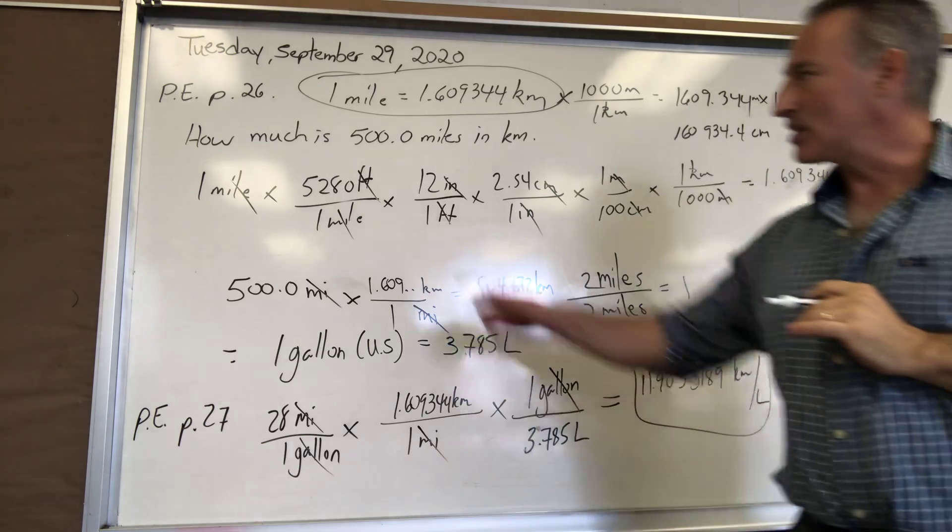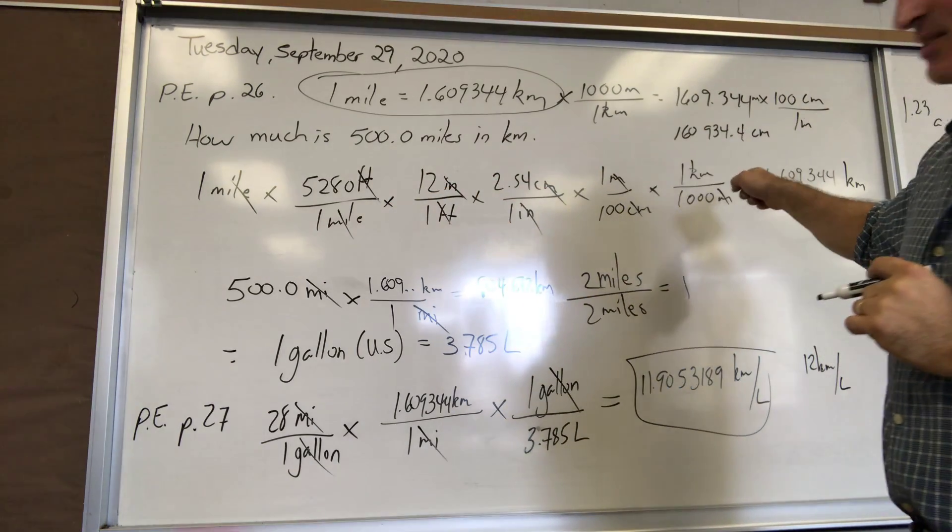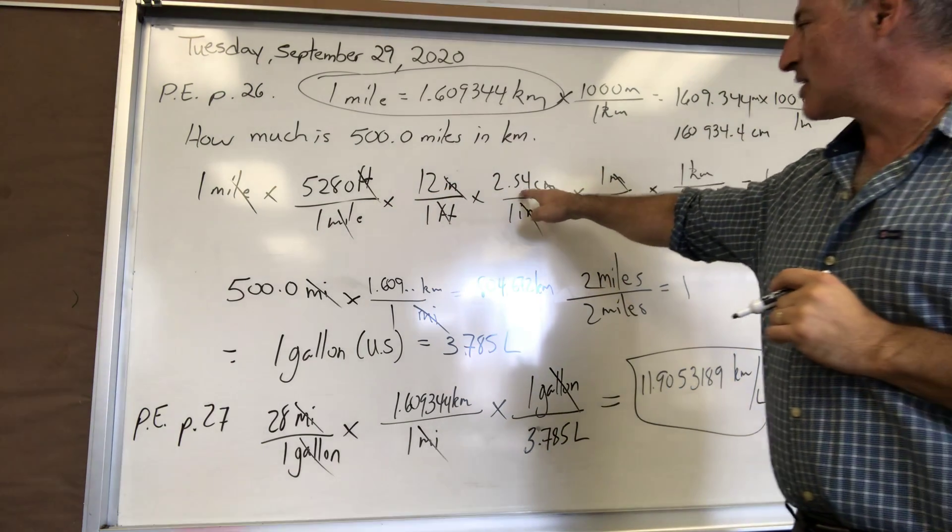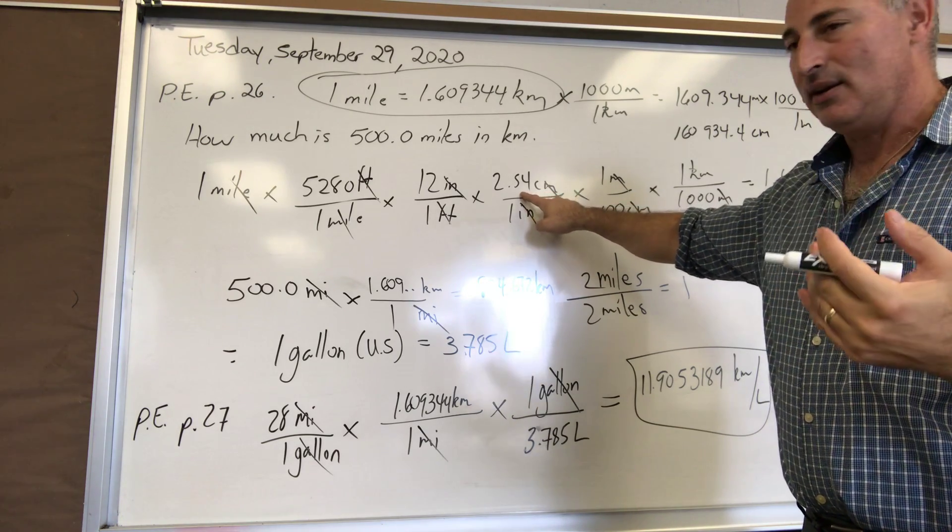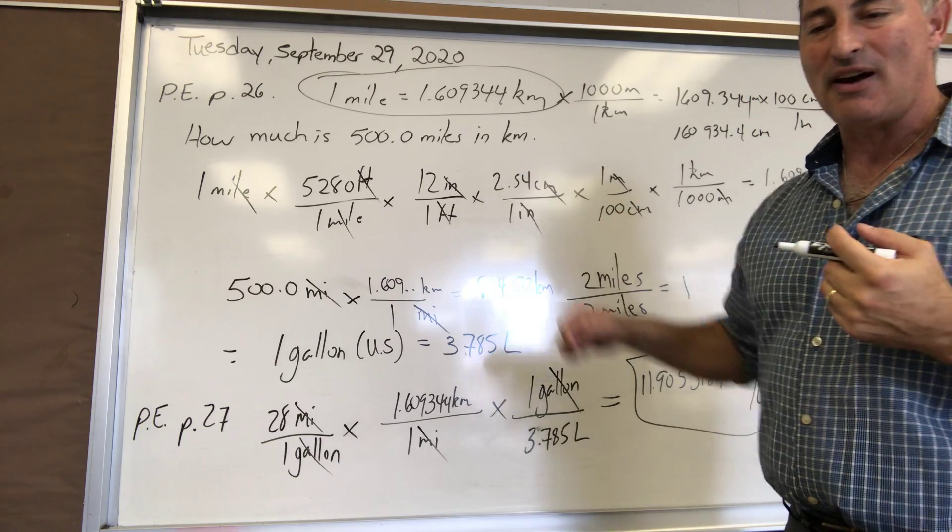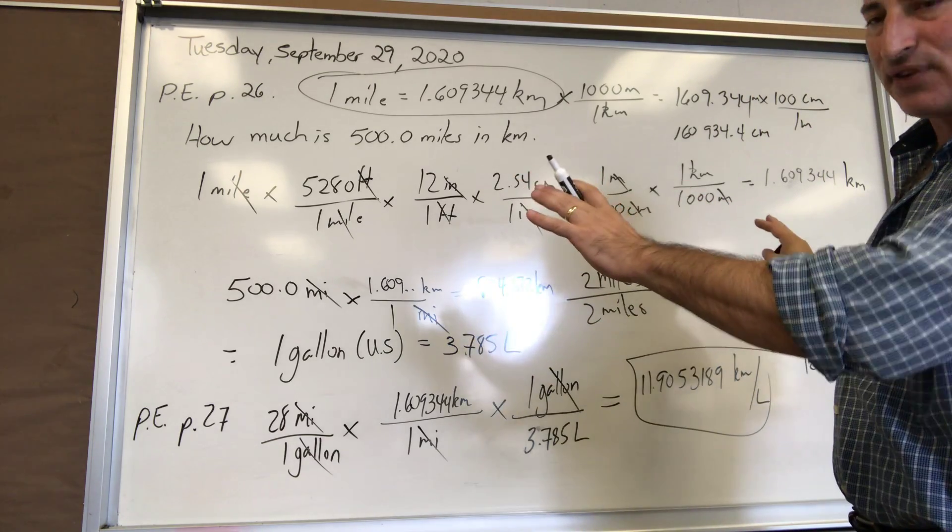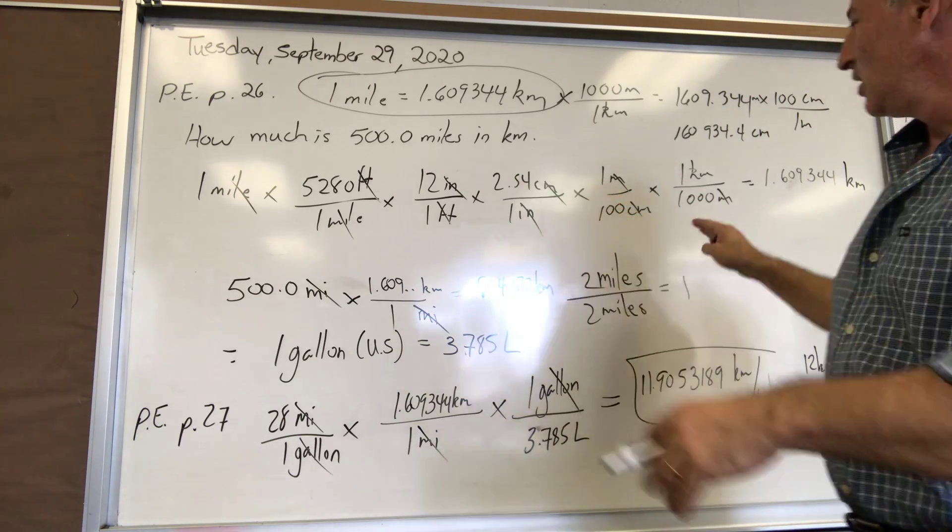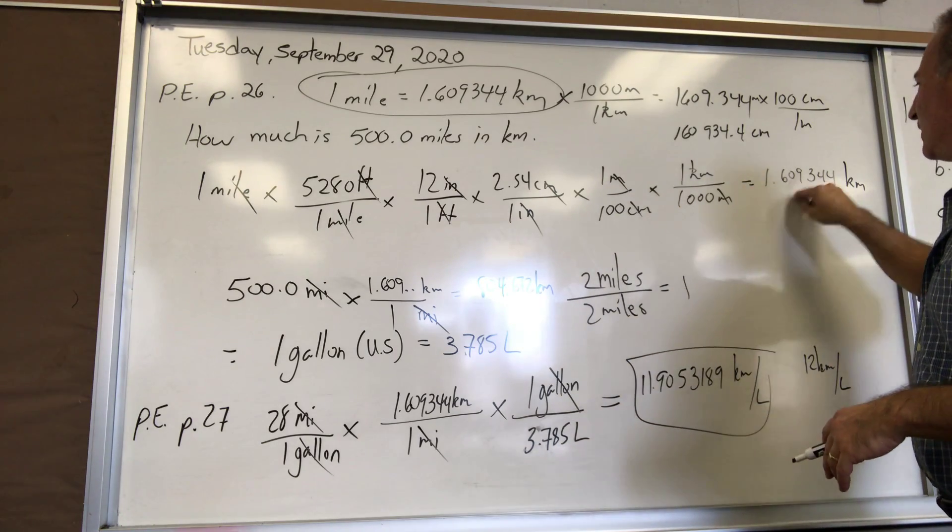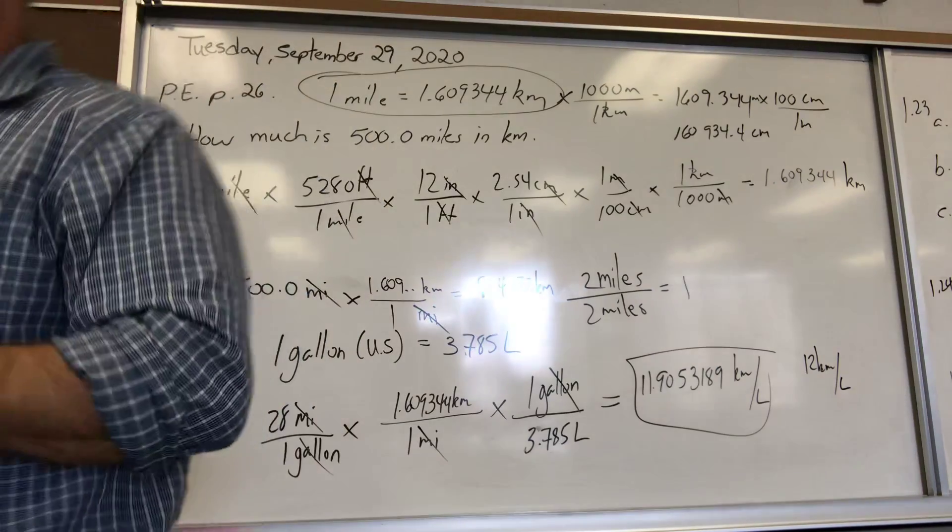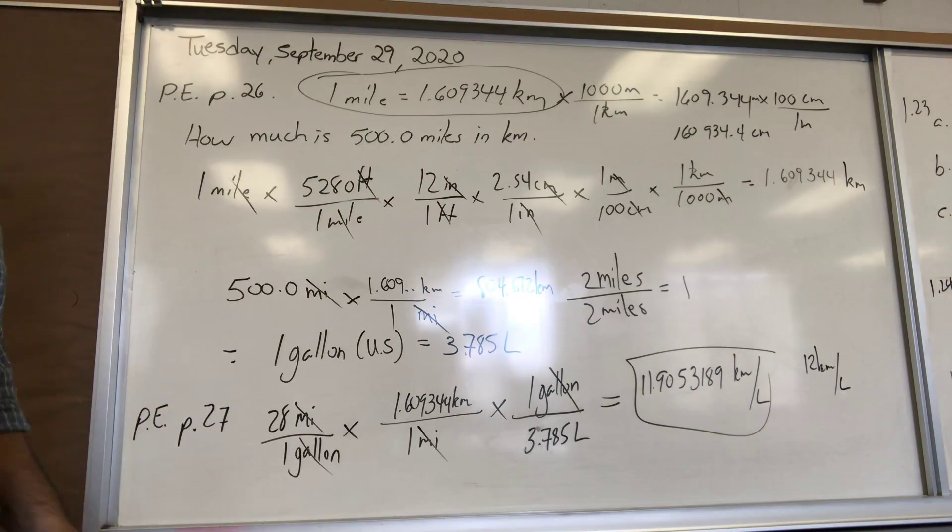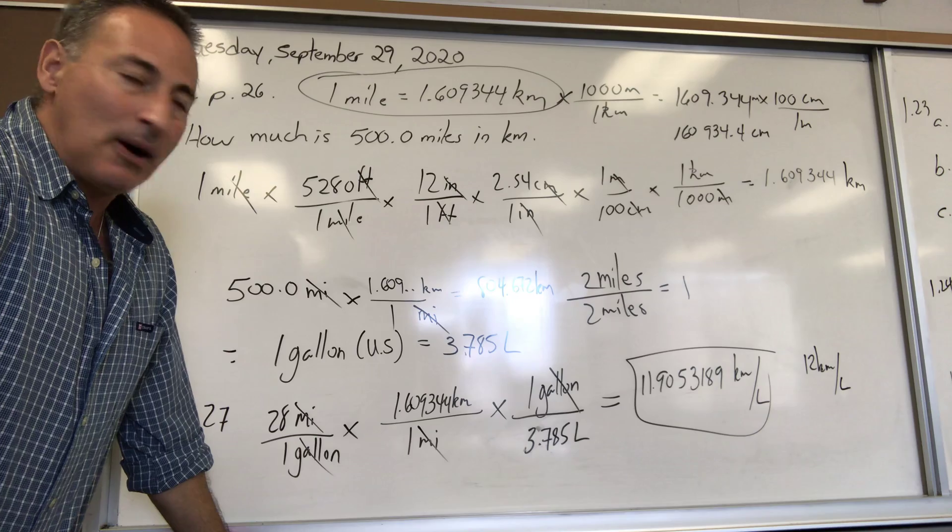The answer you get is 1.609344. It's an exact number because all of these conversion factors are exact. All the scientists of the world agreed that one inch is exactly 2.54 centimeters, so there's no significant figures in this calculation. One mile is exactly 1.609344 kilometers, or if you like, it's 1,609,344 millimeters in a mile.